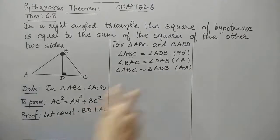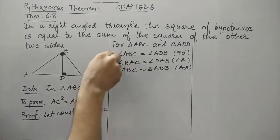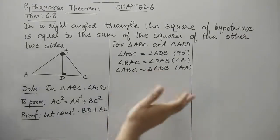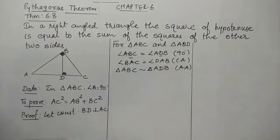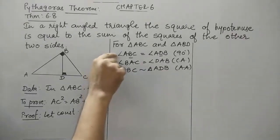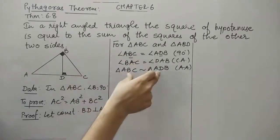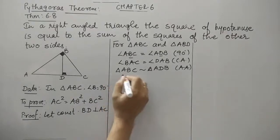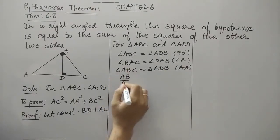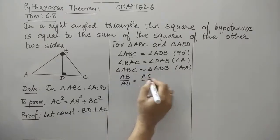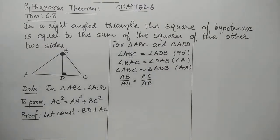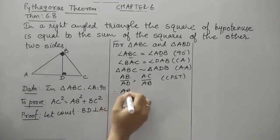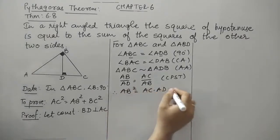In the textbook, they have already given this similarity using theorem 6.7 without showing these two steps. But remember, if you skip these steps, it can be a problem — you may show the wrong similarity. So we must do these two steps. Now, as we know that when two triangles are similar, the corresponding sides are in proportion. AB corresponds with AD and AC corresponds with AB. By CPST (corresponding parts of similar triangles), cross multiplying gives us AB² = AC × AD. This is equation 1.